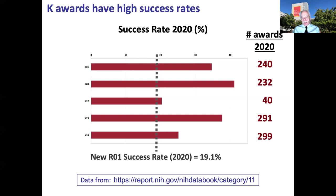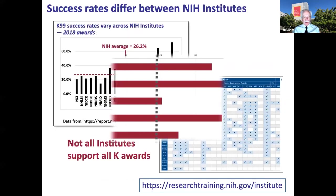The K99 is a little more competitive, hovering around 25% for many years — one in four for the K99R00 — with just shy of 100 awarded last year. The K22 is a little above 20%, with only 40 awards last year. These are excellent success rates compared to colleagues applying for R01s — the success rate for a new R01 at NIH in 2020 was 19.1%, about one in five. Good preparation, strong mentors, a great institution, and great science will enhance your odds well above these averages.